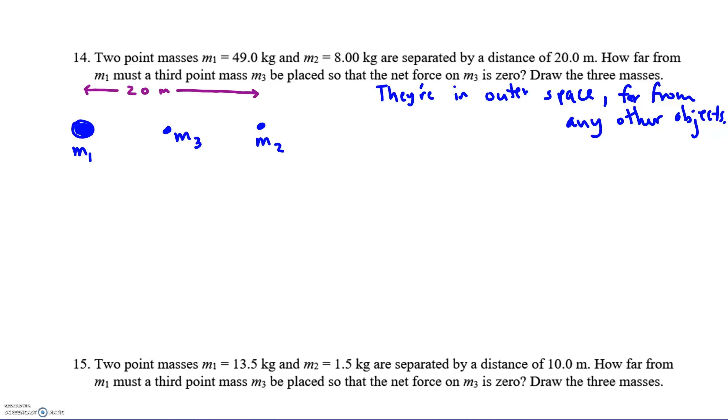So pretend it's just them, just these three. Newton's law of universal gravitation says every two masses are attracted with the force of gravity. M3 is going to get pulled to the left because it's attracted toward M1, and M3 is going to get pulled to the right because it's attracted toward M2.